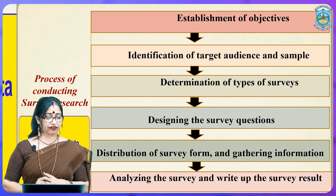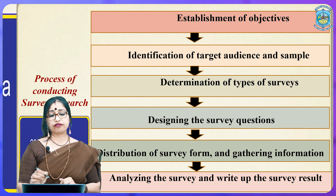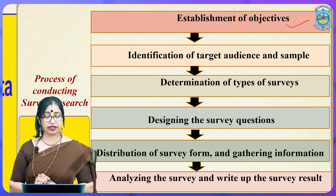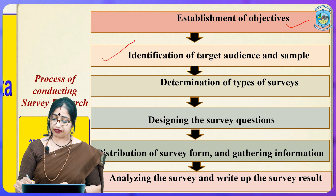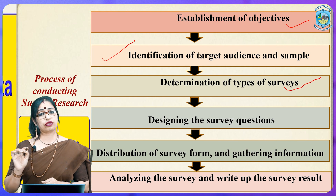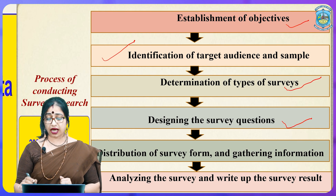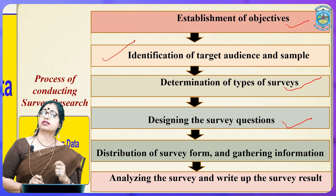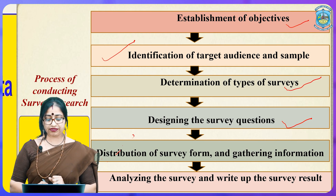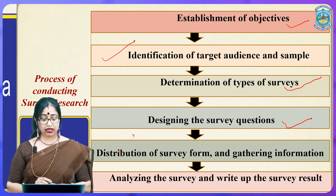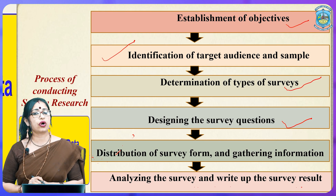The process of conducting survey research follows a flow chart. First, establishment of objectives. Second, identification of target audience and sample. Third, determination of the type of survey. Fourth, designing the survey questions pertaining to the research topic. Fifth, distribution of the survey form and gathering information. Finally, analyzing the survey and writing up the results or conclusions.